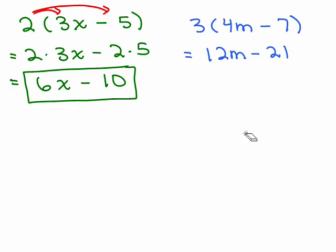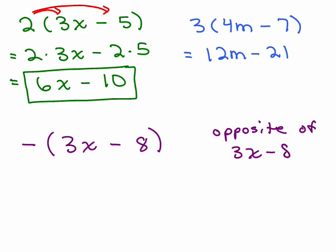Alright, so let's go ahead and work with some problems where we've got a minus sign in front of the parentheses, a little bit different angle. How about if we had a minus, just a minus sign and nothing else? 3X minus 8. This can be thought of as the opposite of 3X minus 8, okay?